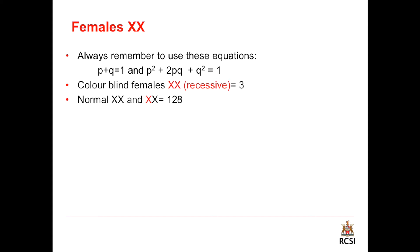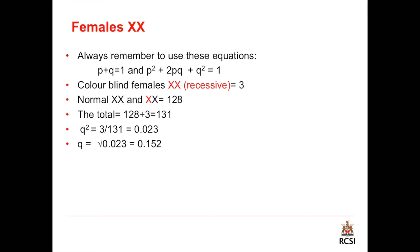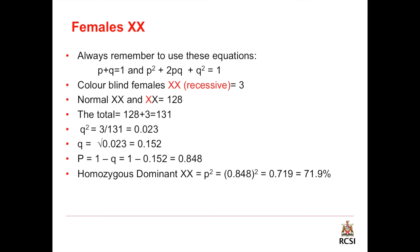Normal females — which refers to normal females and carriers — equals 128. The total number of color blind and normal females equals 131. To get the homozygous recessive, divide the number of color blind females by the total number, giving q squared equal to 0.023. To get q, we take the square root of q squared, so q equals 0.152. Since p plus q equals 1, p equals 1 minus q, which equals 0.848. To get the homozygous dominant, we square p: p squared equals 0.719.